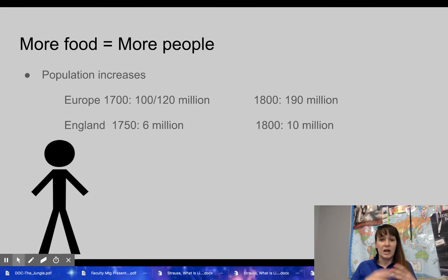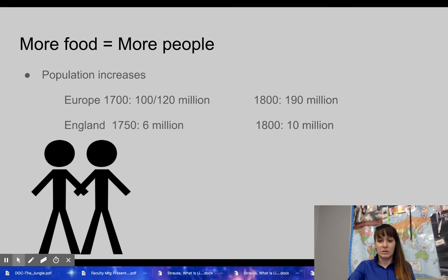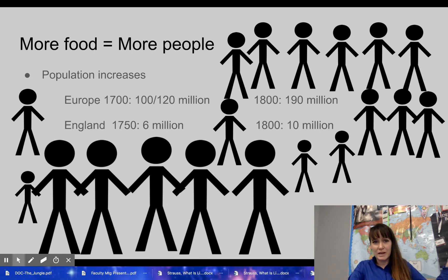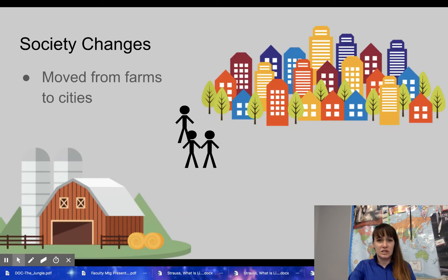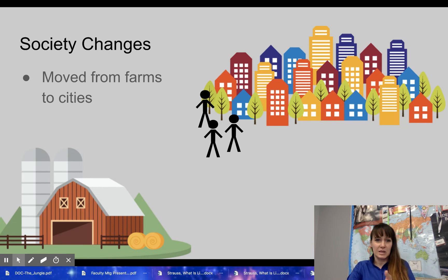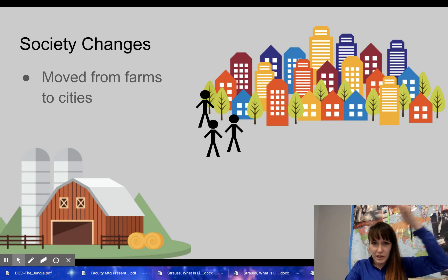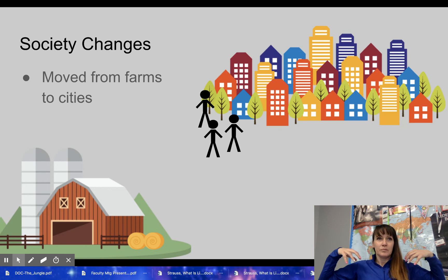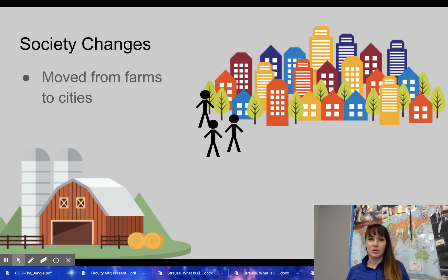Society changed because people were moving from farms to cities to find work. What do the cities do when all these people start coming in? Can they handle more people? More people often means more disease and more waste. We'll talk about these effects more, but start thinking about what's going to happen.